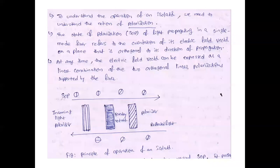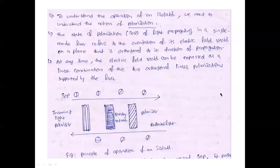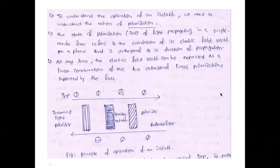Now, understanding the concept of the isolation principle: the isolator works on the concept of state of polarization. The signal enters port 1, passes through a polarizer, then a Faraday rotator. The Faraday rotator changes the phase of the signal by 45 degrees. The output of the Faraday rotator has a 45-degree change in polarization state.